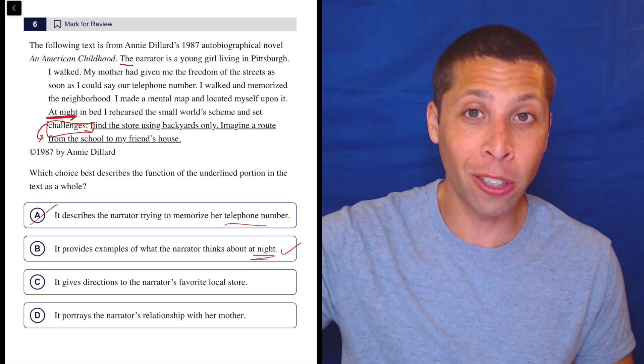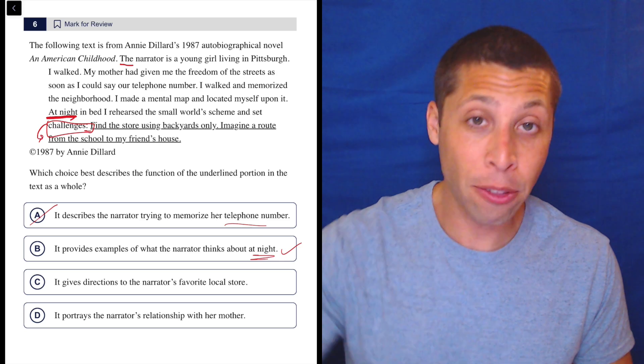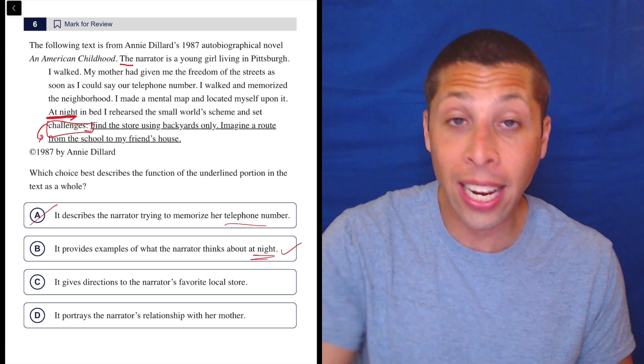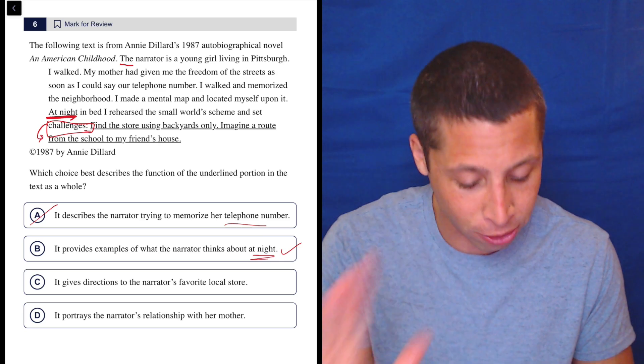So rather than waste time memorizing that detail earlier, I just let it go. And now the choice is saying that this is about things she's thinking about at night. I can go check that. And sure enough, it checks out. So that seems good. Let's look at C and D though.